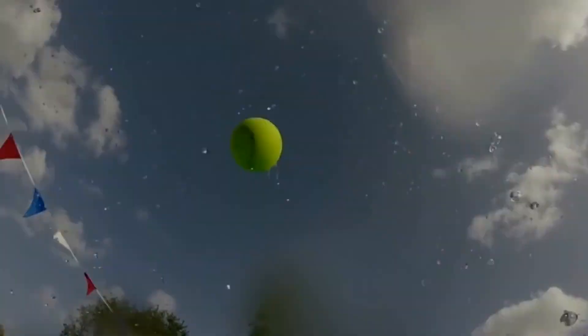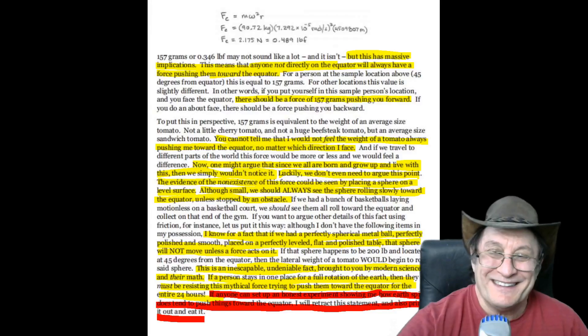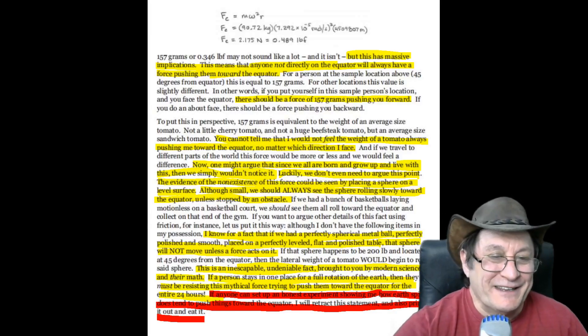We are supposed to believe that uniform circular motion or spin of the Earth is powerful enough to smush the ball, yet we can't measure even the slightest force of pull toward the equator. Anyway, let's get on with it.